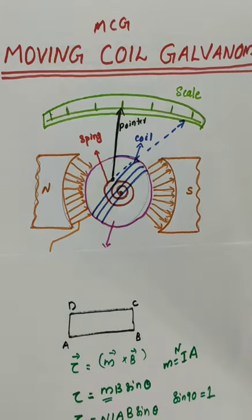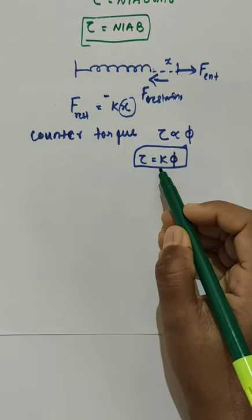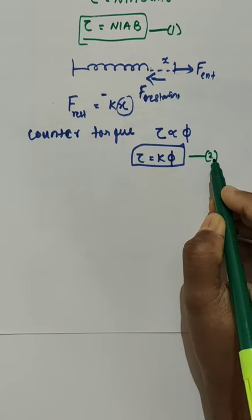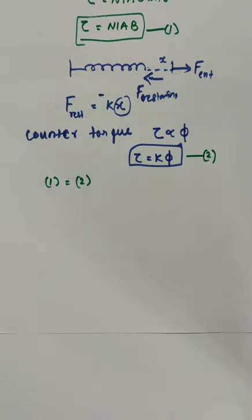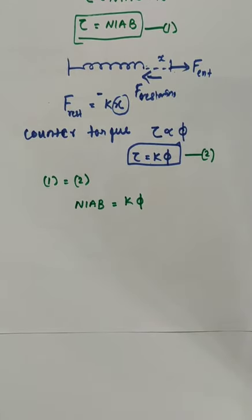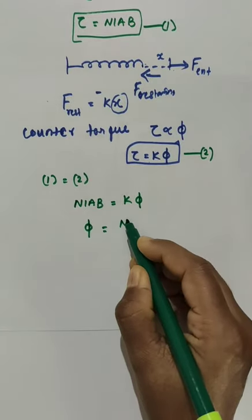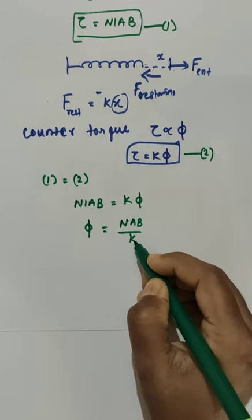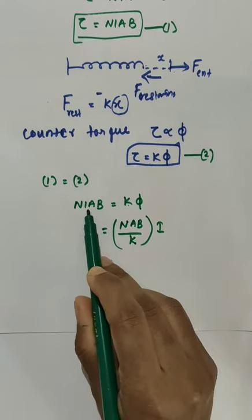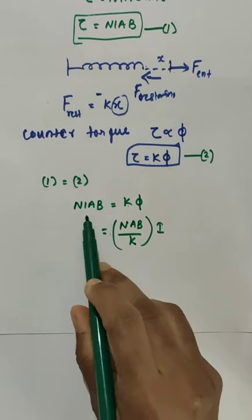In equilibrium, the magnetic torque and the counter torque are equal to each other. So N I A B equals K phi in equilibrium. From this, we can write the expression for phi: phi equals NAB divided by K, times I.